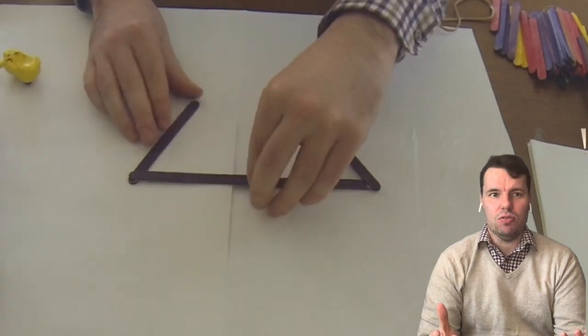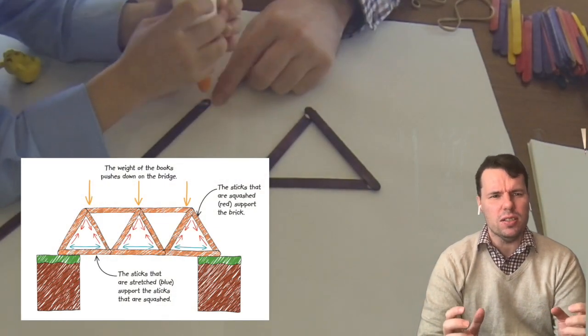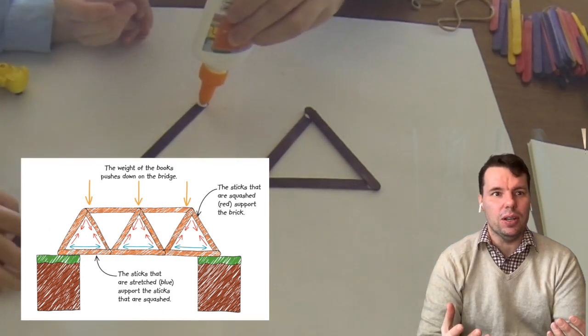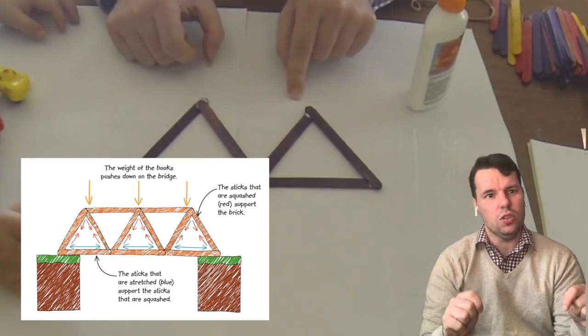When engineers build large structures such as bridges or buildings, they have to take into account how forces such as gravity, compression, tension, and torque will act on the building materials. Gravity is constantly working to pull materials, especially heavy ones, towards Earth.